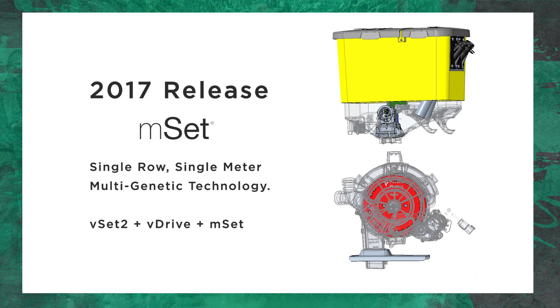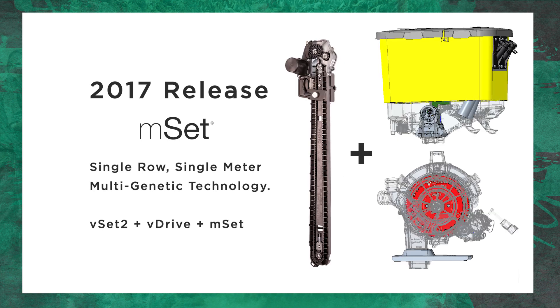In 2017, it got better. MSET came out, eliminating the need for the second meter. Now we can do it with one meter, which brought the cost down, and it also allowed us to put a speed tube on the bottom of this meter so growers could do multi-genetic planting as well as high-speed planting.